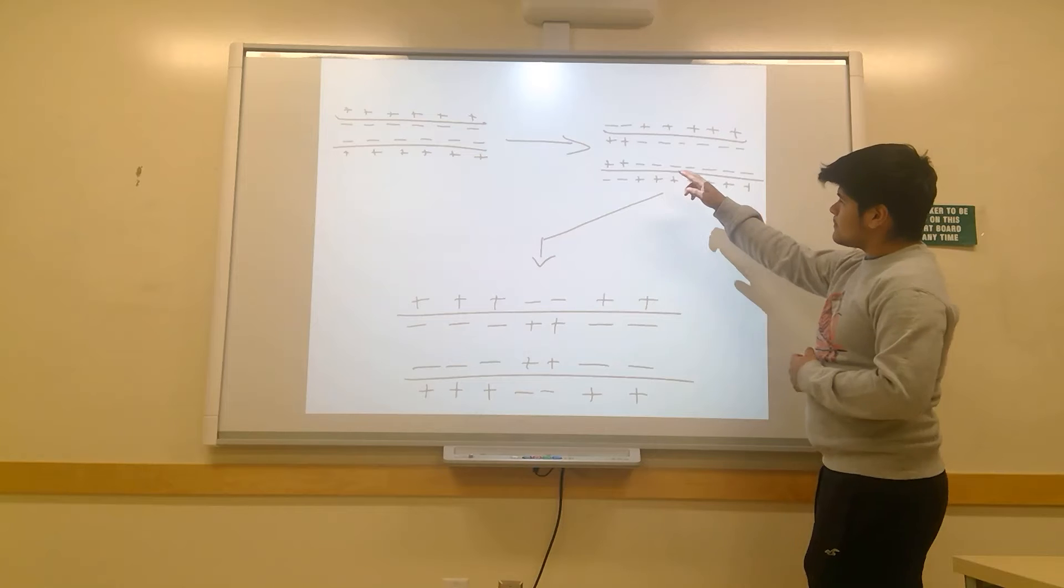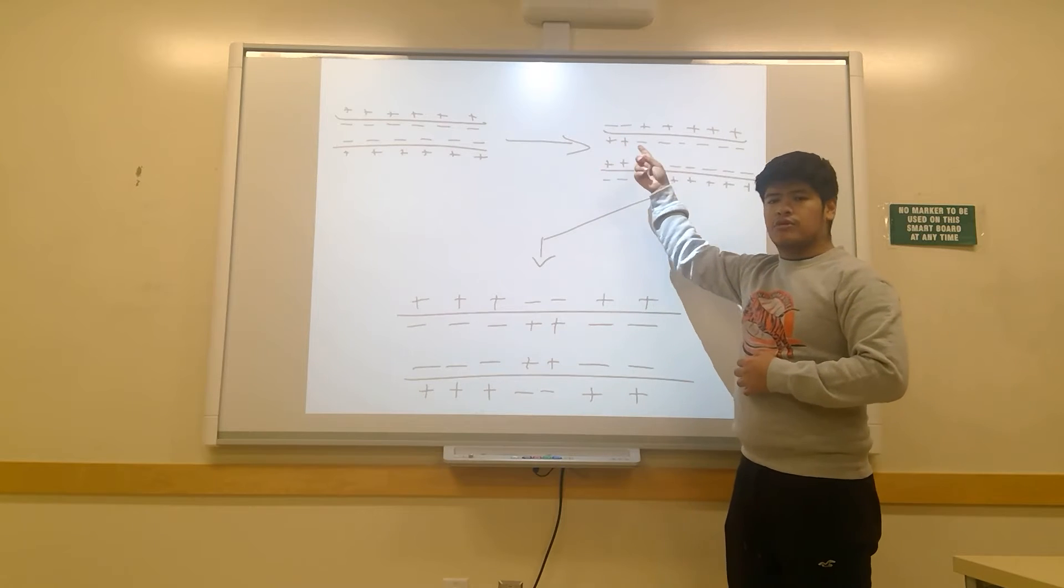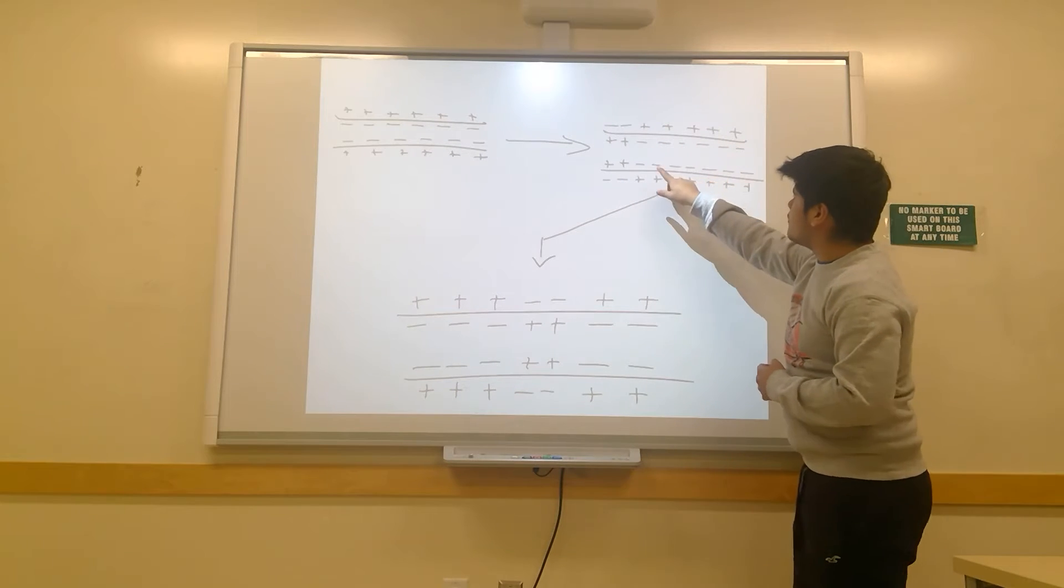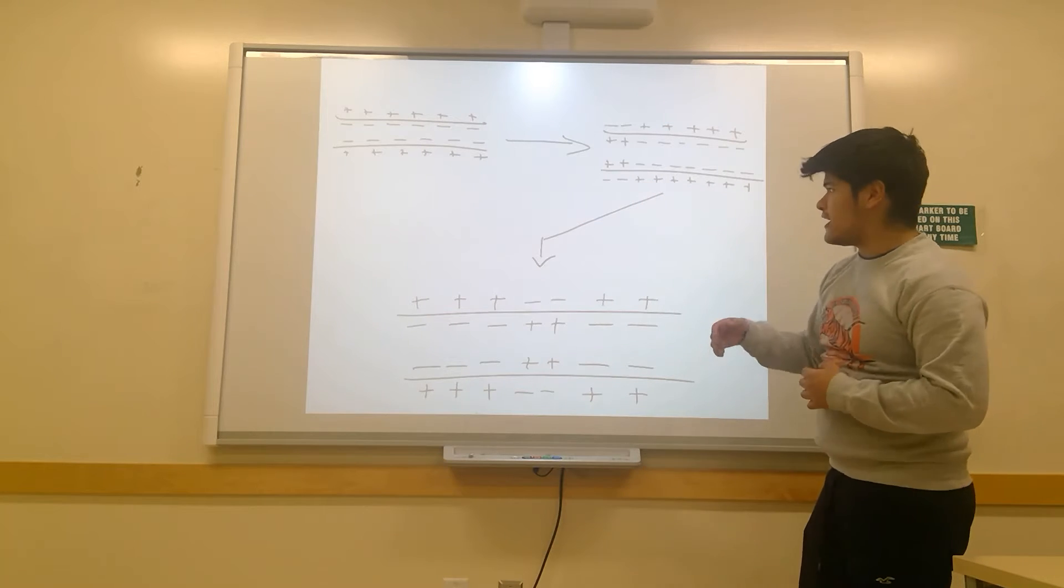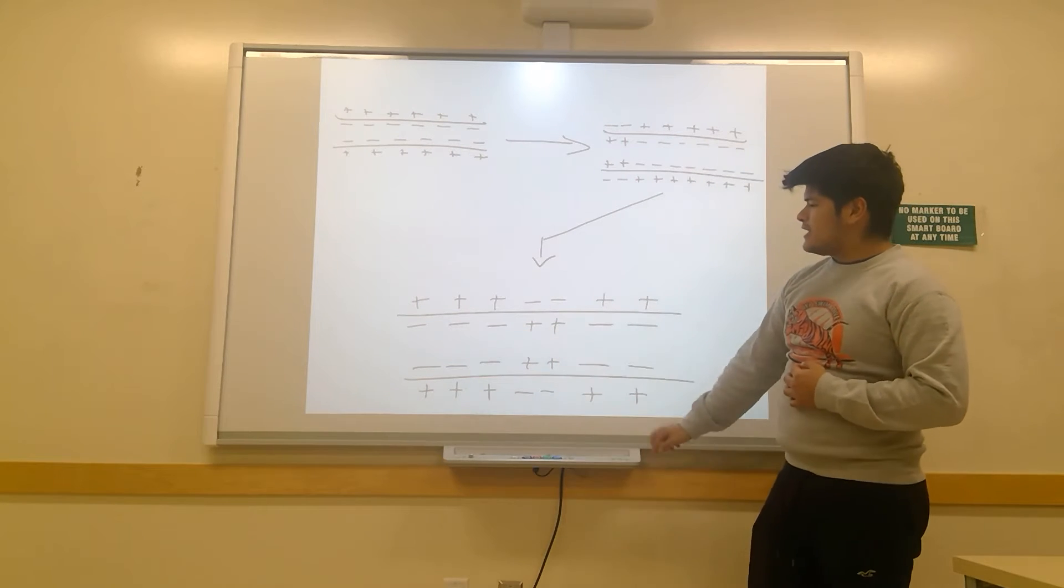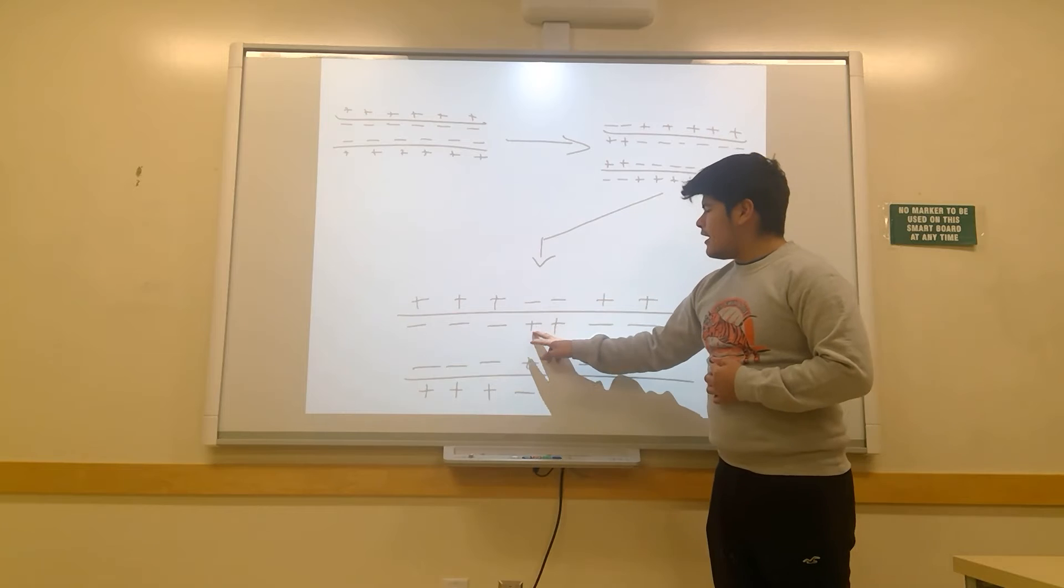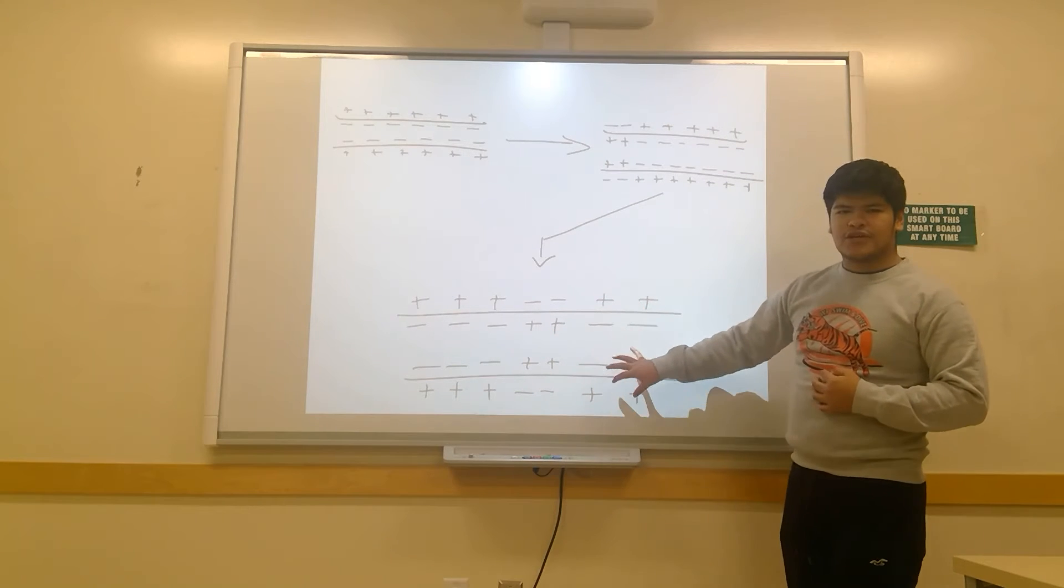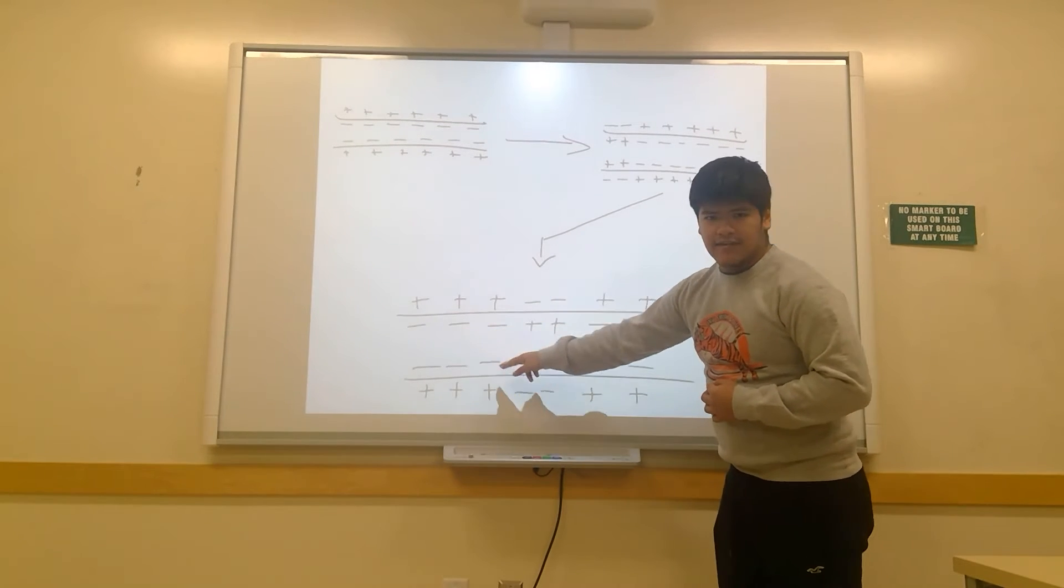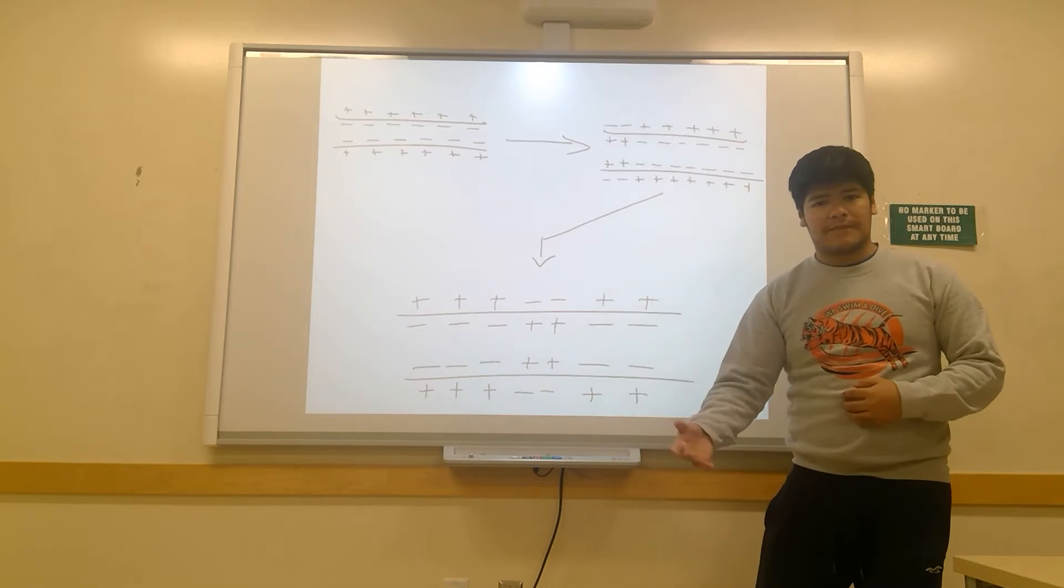When there is an action potential, you will see that the inside of the neuron is positively charged where that action potential is located, and the outside is now negatively charged. However, the rest of the axon will be negatively charged on the inside and positively charged on the outside. As the action potential travels down the axon, as shown here, you will see that this flipping of charges also continues to travel down the axon. The areas that have not been turned positive will remain negative until the action potential gets there, and the areas inside of the axon that have already been positive will revert back to being negative.